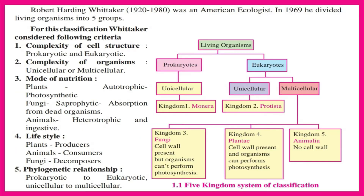Robert Harding Whittaker (1920–1980) was an American ecologist. In 1969, he divided living organisms into five groups. For this classification, Whittaker considered the following criteria: 1. Complexity of cell structure — Prokaryotic and Eukaryotic. 2. Complexity of organisms — Unicellular or Multicellular.